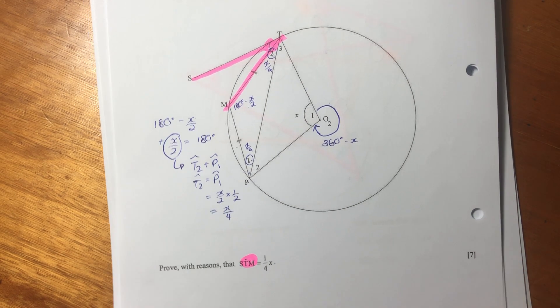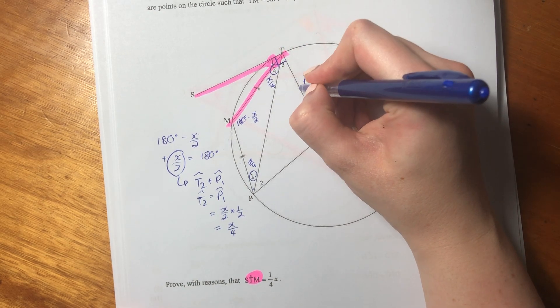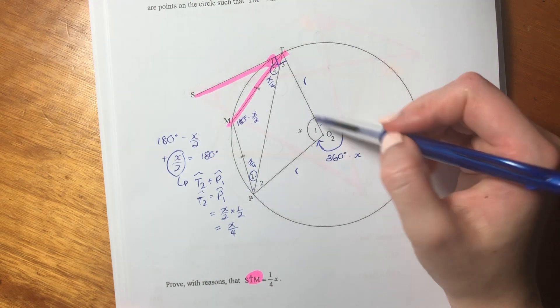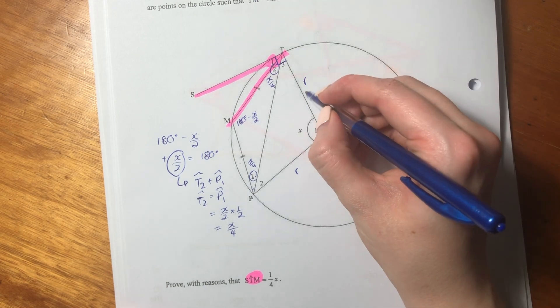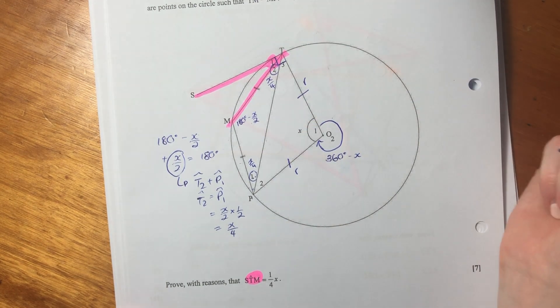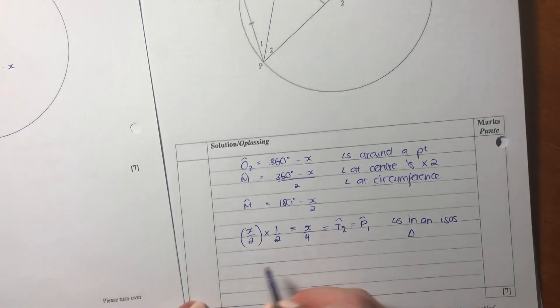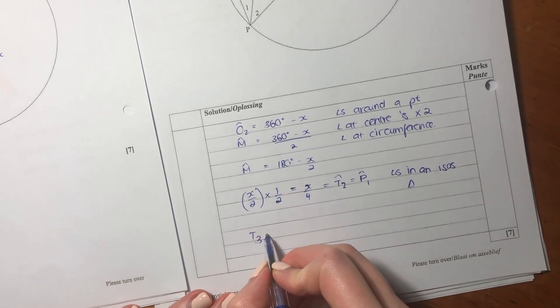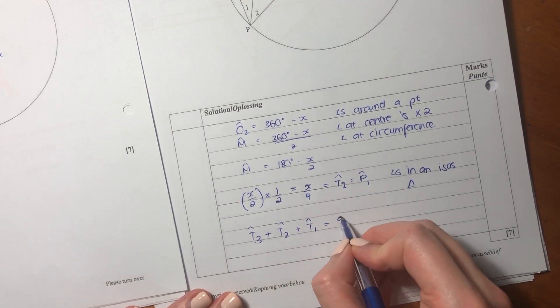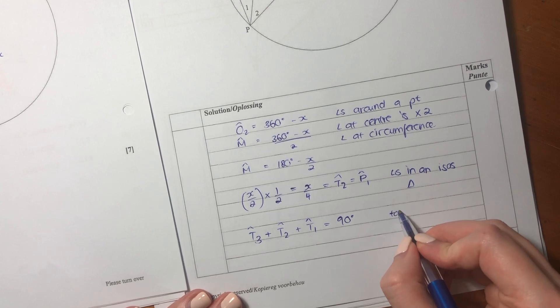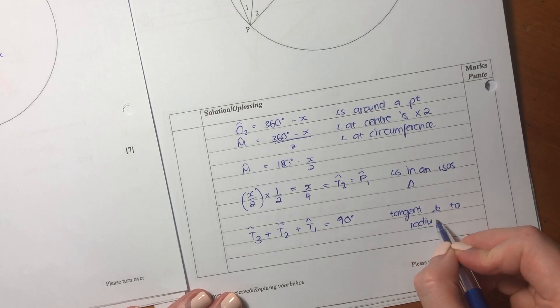Now, what you should know is that this is 90 degrees, because this is a radius, this is also a radius. And remember, when a tangent hits the circumference and there's a radius, this is 90 degrees. So we know also that this equals this. So what I'm going to say is, we know that T3 plus T2 plus T1 equals 90 degrees. And we're going to say tangent perpendicular to radius.